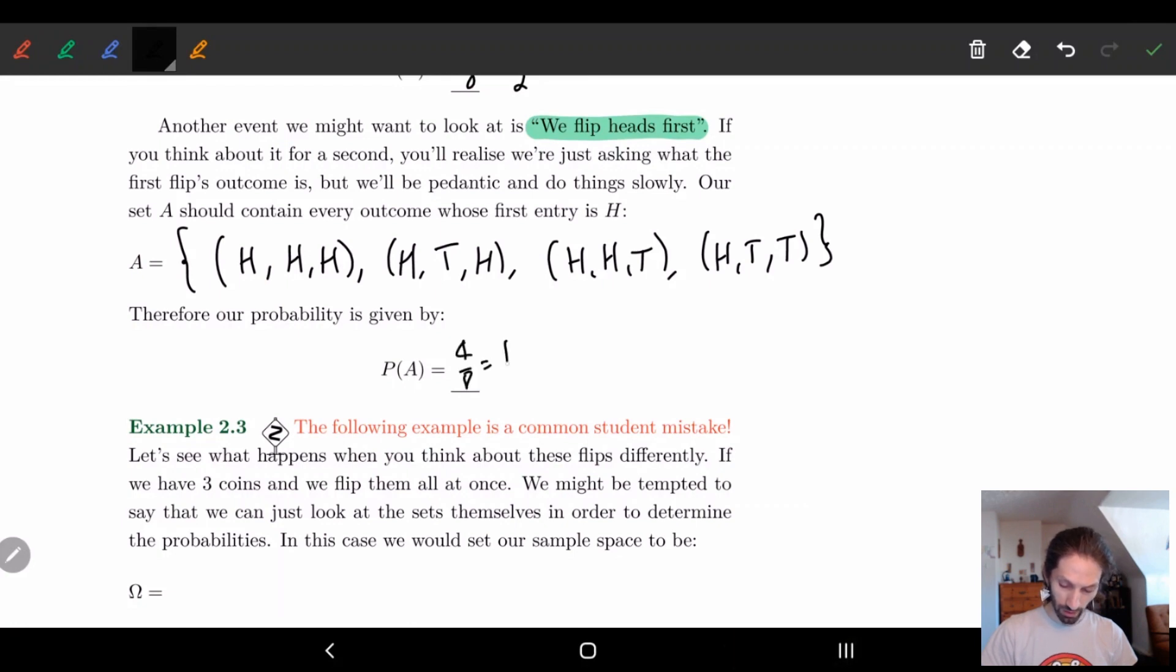But the thing is, sometimes we have to think about the language you're using. "We flip heads first." Well, all we're asking in this case is equivalent to just saying flip one coin and heads appears. So we can rewrite this as omega equals {H, T} and A is heads. So in this case, this gives us one half right away. So sometimes you're going to have to look at the language and be like, oh, can I redo this in order to make more logical sense to make my life easier? You're going to have to think about these things a lot of the time.